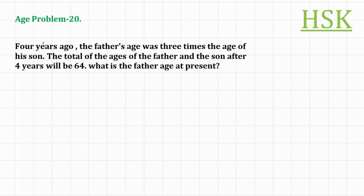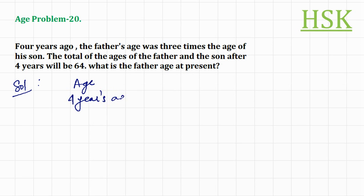Age problem: four years ago the father was three times the age of his son. To solve the problem, I assume that four years ago this row is for father's age and this for son's age. Four years ago the father's age was three times the age of the son. If the son's age was x, then father's age would be 3x.